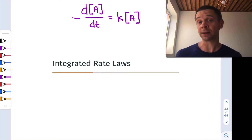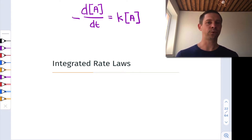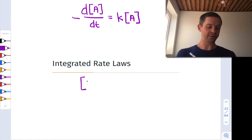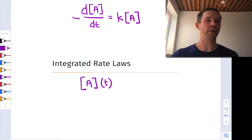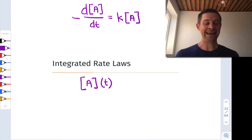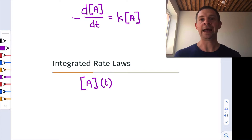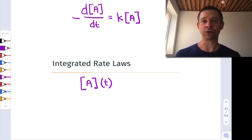We often don't measure reaction rates directly. We have to calculate them by looking at rates of change between two adjacent measured time points. What we really would like to have is the direct dependence of the concentration of A on time — some function of time that tells us the concentration of A at any time point after the reaction has started. This is the integrated rate law, and we arrive at it by integrating the differential rate law.